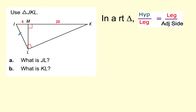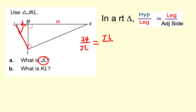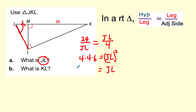Let's find JL. JL is also a leg. The whole hypotenuse is 24, and since we're working with JL, the adjacent side is 4. So we set up: 4 times 24 — and since 24 is 4 times 6 — equals JL squared. JL equals the square root of this product. Since I have a perfect square, I can take that out of the square root to get my answer.